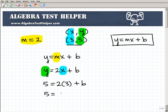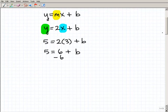So 5 is going to be equal to 6 plus b. And then I'm going to go ahead and subtract 6 from both sides. 6 from both sides of the equation, and I get negative 1 is equal to b. And that's it.